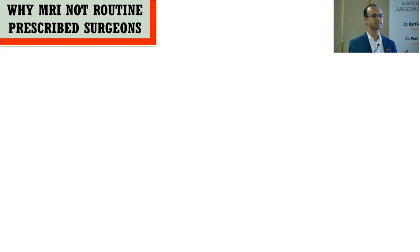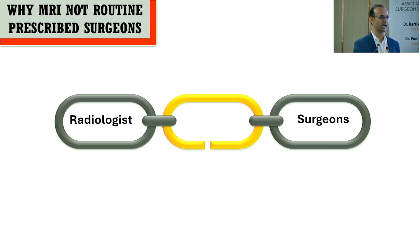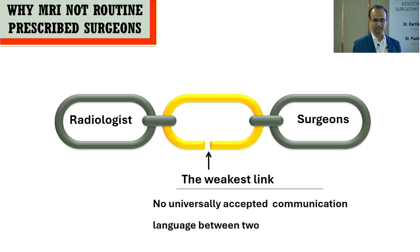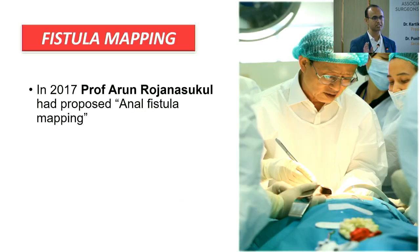Why don't surgeons routinely prescribe MRI? The basic problem is that radiologists give St. Mark's classification or St. James's classification, while surgeons think in Parks classification — and nothing aligns on the operating table. The weakest link in MR fistulogram is that the universal language of radiologist and surgeon doesn't meet. Radiologists don't know which finding changes the surgeon's treatment plan — this is the major crux.